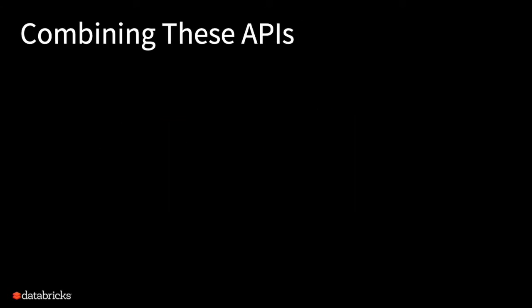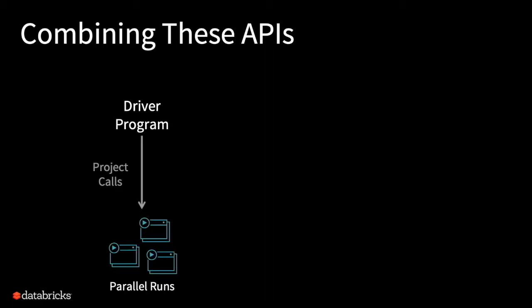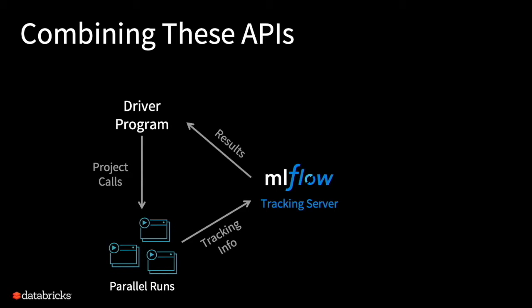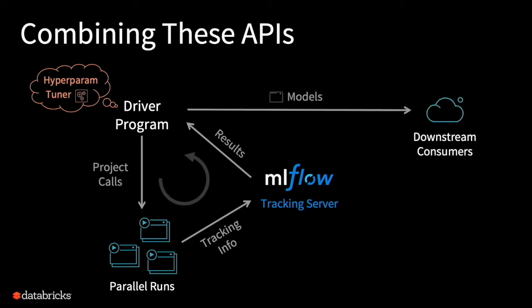You can put these components together for automated workflows. Because everything has an API, it's easy to hook them up. For example, you can have a driver program kick off a bunch of parallel runs doing hyperparameter optimization to build a model. These runs report tracking info, and you can use the API to query results, pick the best one, and deploy it. You can run a hyperparameter tuner in a loop, and when you pick the best model, ship it somewhere. It's easy for someone with a DevOps mindset to create automation that still plugs in with what model developers and users are doing.